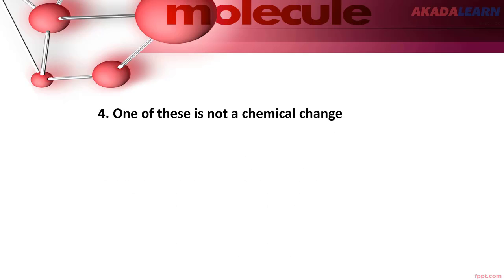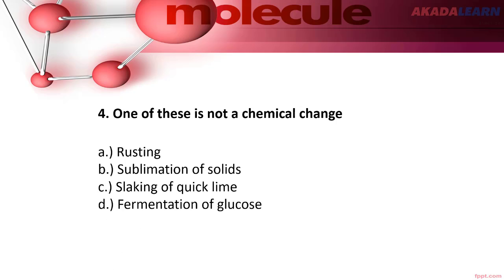Number four: One of these is not a chemical change: A) rusting, B) sublimation of solids, C) slaking of quicklime, or D) fermentation of glucose.